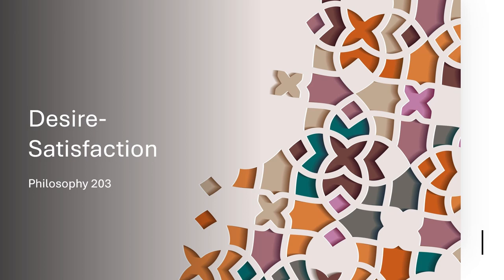Hello. In this lecture, we'll be taking a look at the second of three major families of theories of well-being. This one will be desire satisfaction. Just apropos of nothing, does it sort of look like the pattern on the right-hand side of that image is ever so slightly moving toward the left when you're not looking directly at it? Maybe it's just my eyesight. This is just one of the standard clipart things that PowerPoint suggested, but I guess I'll keep it. I've recorded 30 seconds so far — it seems silly to ditch it all for that.